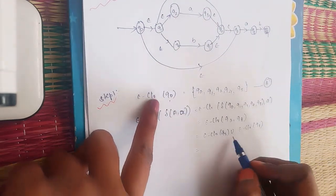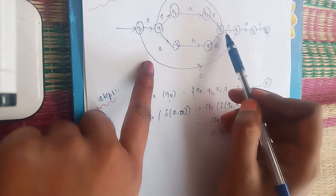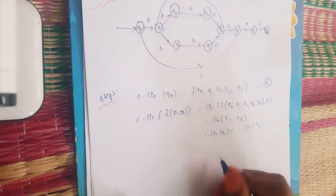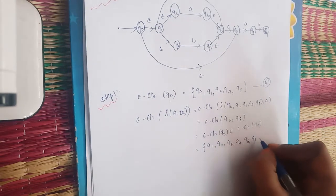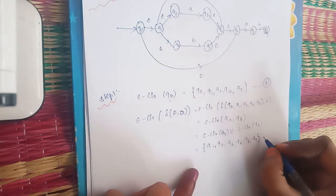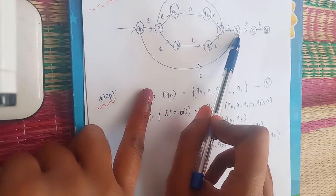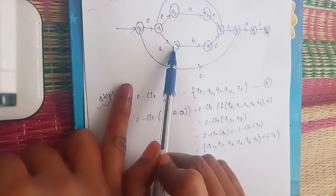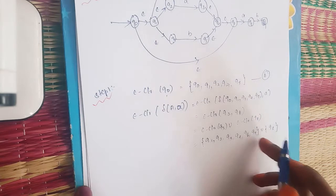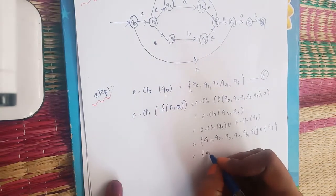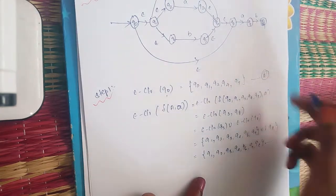We find E-closure(Q3) ∪ E-closure(Q8). E-closure of Q3 gives {Q3, Q6, Q7, Q1, Q2, Q4}. E-closure of Q8 gives just {Q8} — the self-state only. So the combined set is {Q1, Q2, Q3, Q4, Q6, Q7, Q8}, which is a new state named B.